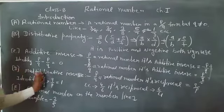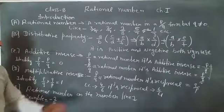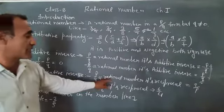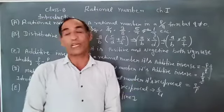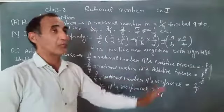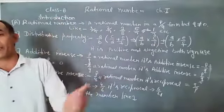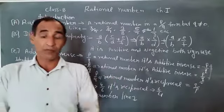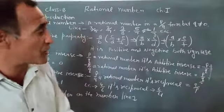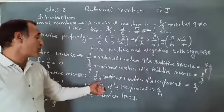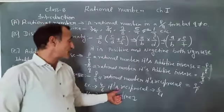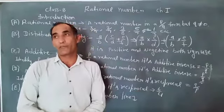The multiplicative inverse, a rational number P upon Q, is reciprocally Q upon P, means numerator convert into the denominator. Denominator convert into the numerator.